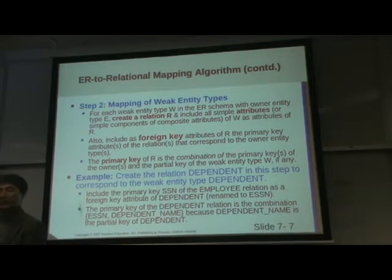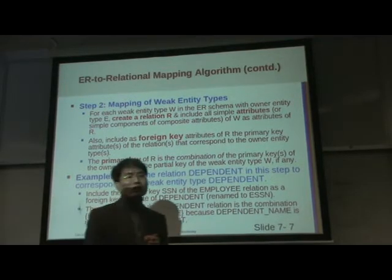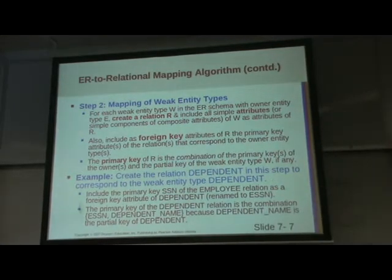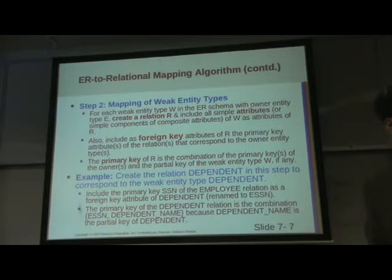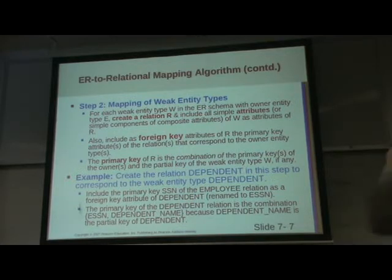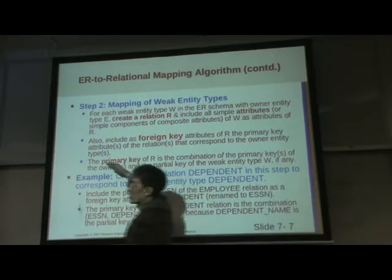The next step is the weak entity. A weak entity has only a partial key. We find the identifying relationship — the double diamond — which is the identifying relationship. Then we borrow: to identify the entity in the weak entity, we can borrow the primary key — the key attribute of the identifying relationship — and using that, we can make the primary key.